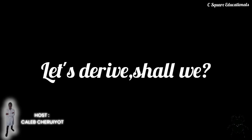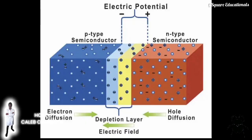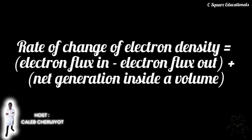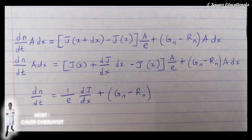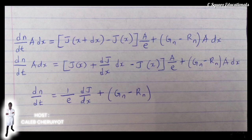Consider the fact that the number of electrons is conserved across a volume of semiconductor material with cross-sectional area A and length dx along the x-axis. More precisely, the rate of change of electron density equals electron flux in minus electron flux out plus net generation inside the volume. Here J denotes current density, whose direction is against electron flow by convention — also called electron current density.